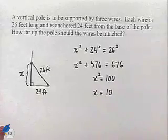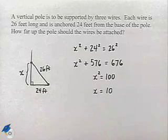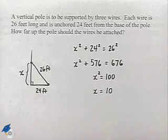So we can answer the question by saying that the wire should be attached 10 feet up the pole.